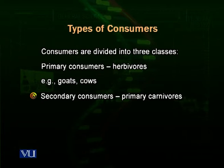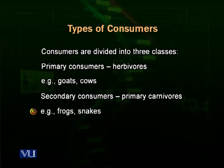Then come the carnivores — the secondary consumers, also called primary carnivores — because they eat upon the herbivores. Frogs and snakes are very common examples. Many insects and dragonflies eat grasses or different plant parts, and frogs eat those insects, making frogs common secondary consumers or primary carnivores. Snakes are another example: different types of rodents — mice and rats — eat grains, grasses, and plant materials, and snakes consume those rodents, acting as primary carnivores or secondary consumers.